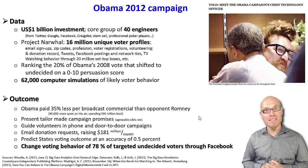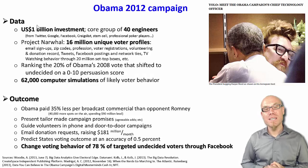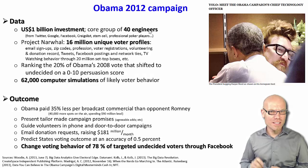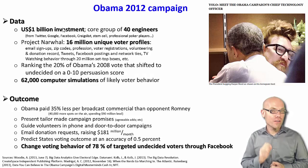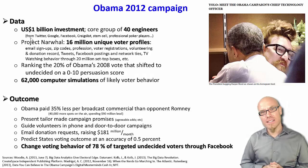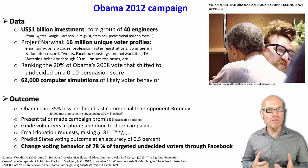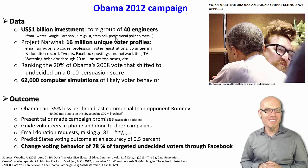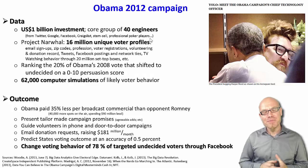What the campaign did is they invested $1 billion into the creation of a group of 40 engineers. They contracted IT engineers from companies like Twitter, Google, Facebook, and Craigslist, and they even had some stem cell researchers and professional poker players.